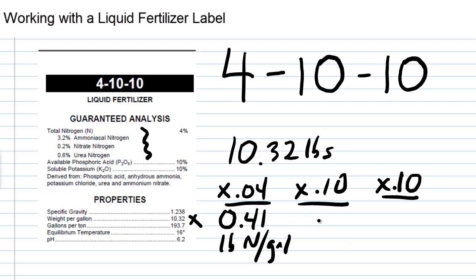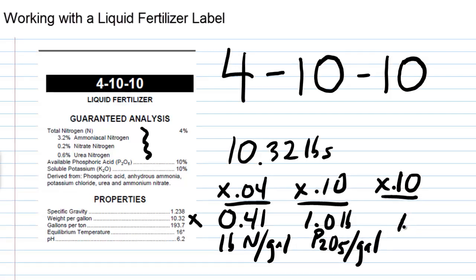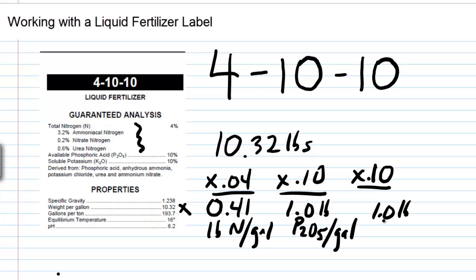10.32 times 0.04 equals 0.41 pounds of N per gallon. And a tenth, this one's going to be at 1.0 pounds of P2O5 per gallon. And again, this is going to be 1 pound of K2O per gallon.